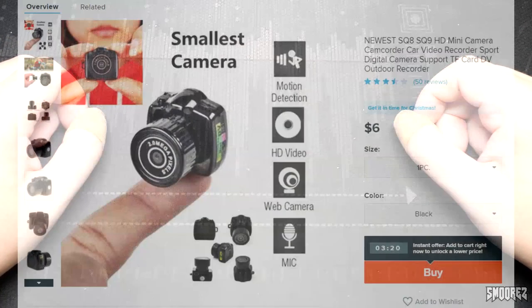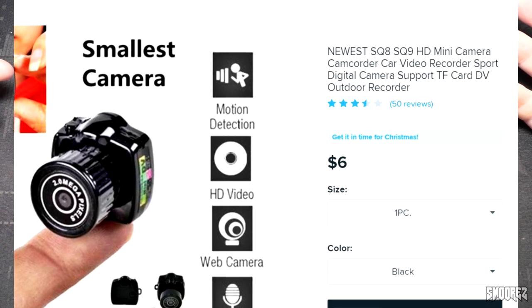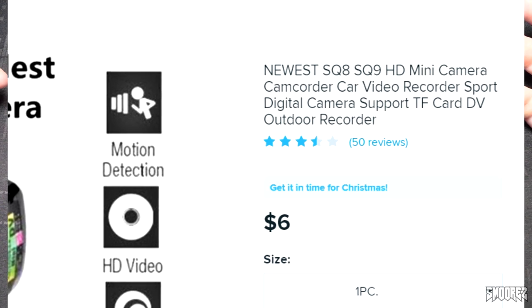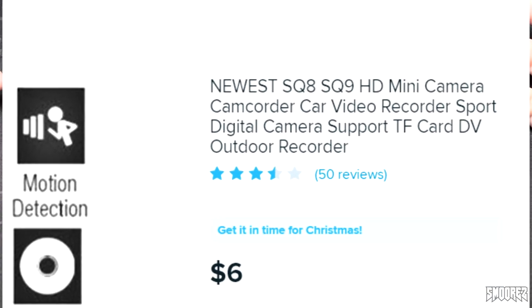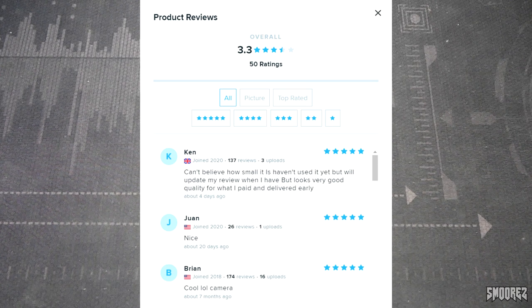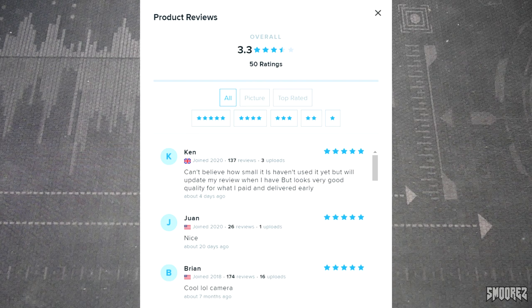What we're looking at today is what is claimed to be the smallest camera. The newest SQ8, SQ9, HD mini camera, camcorder, car video recorder, sport digital camera, supports TF card, DV, outdoor recorder. It's got three and a half stars with 50 reviews. Ken's pretty happy with it by the looks of it, and Brian says it's a cool lol camera. That's fair enough.